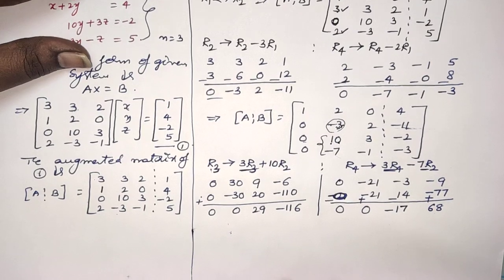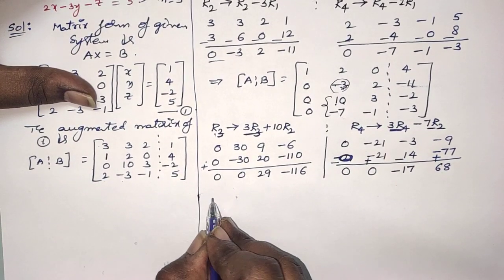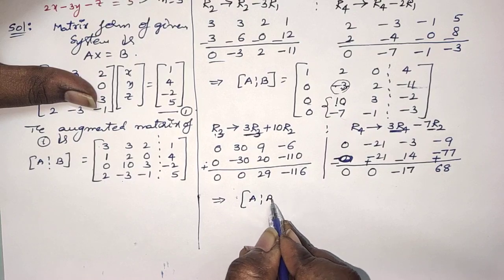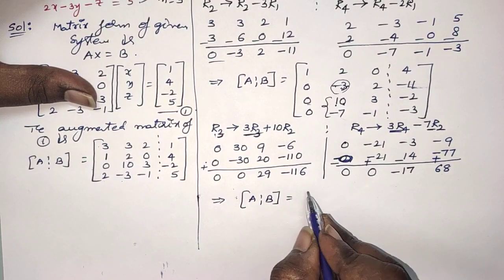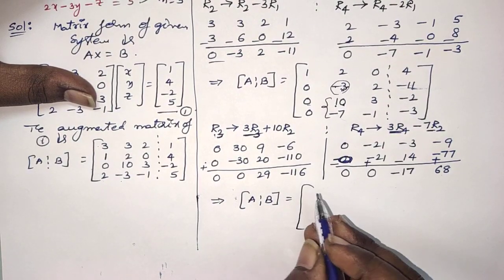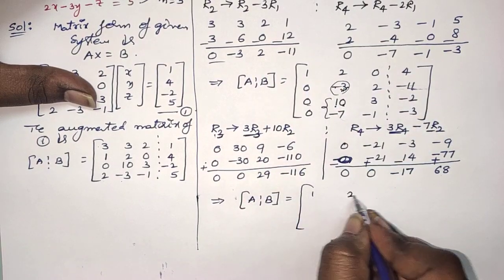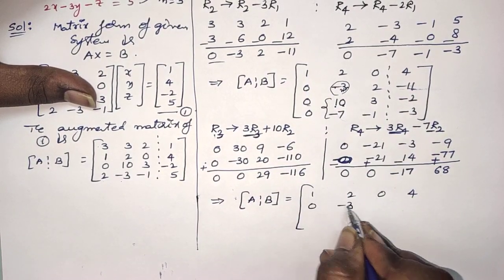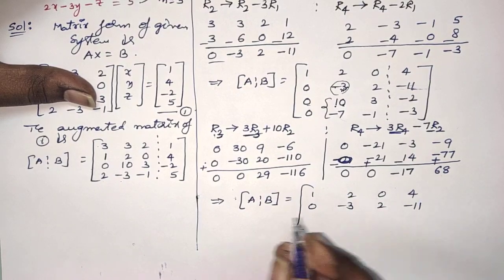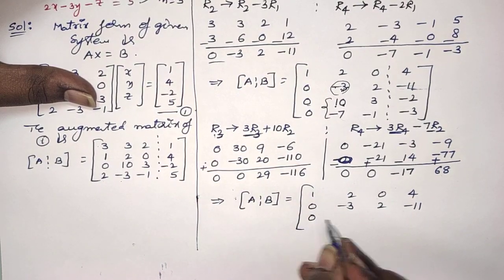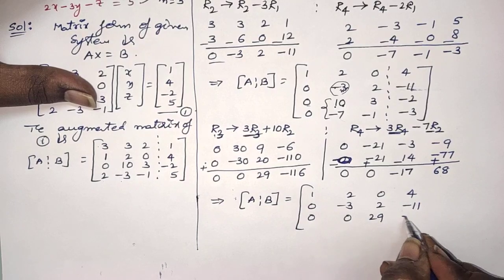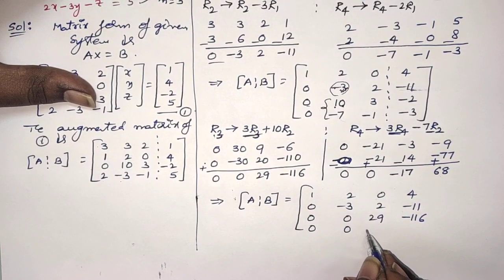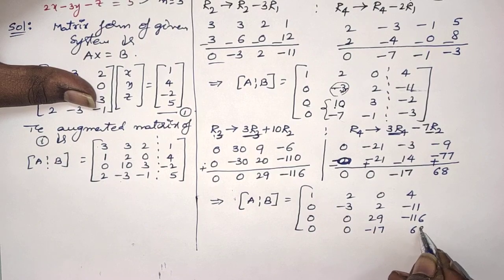So we write the new augmented matrix. The above matrix [A|B] becomes: first two rows same — 1, 2, 0, 4 and 0, minus 3, 2, minus 11. Third row is 0, 0, 29, minus 116. Fourth row is 0, 0, minus 17, 68.